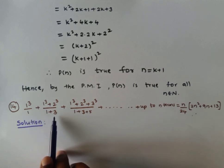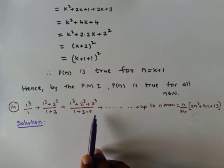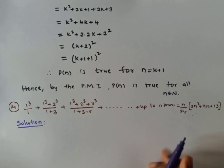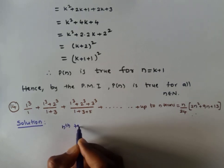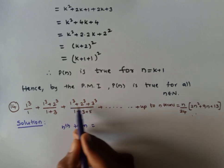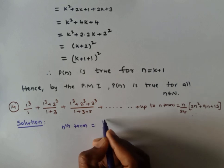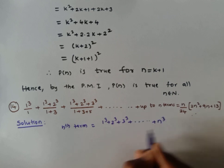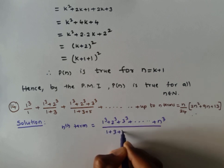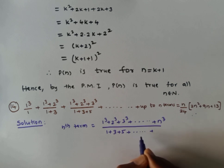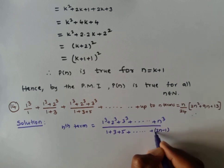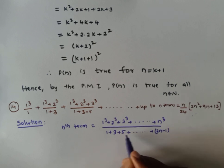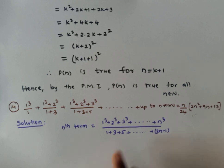Observe the pattern: the denominators are 1, 1+3, 1+3+5 — these are sums of odd numbers. In the fourth term there are 4 odd terms: 1, 3, 5, 7. The general term of odd numbers is 2n−1. So the nth term has numerator = 1³+2³+...+n³ and denominator = 1+3+5+...+(2n−1). We need to find the nth term of the series.